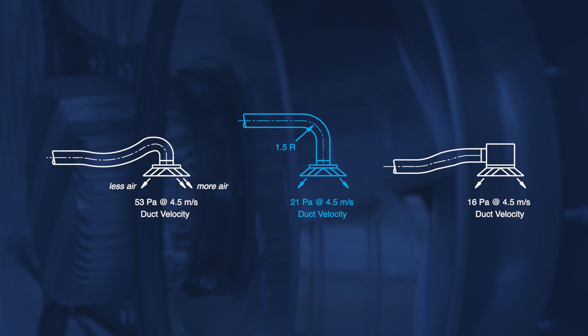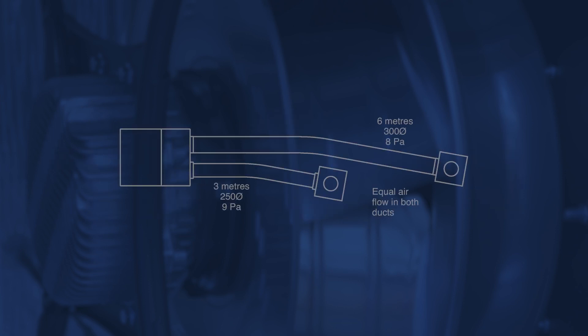Top entry is satisfactory if the flexible duct is supported and makes a gentle radius entry. However, if the flexible duct is left flat and unsupported, it will kink when connected to the diffuser, adding dramatically to the pressure loss. Side entry cushion head boxes are recommended as they improve equal air distribution, reduce noise, and reduce draft.